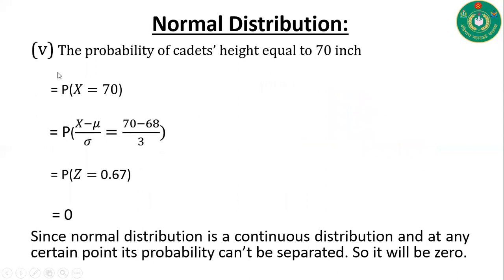Solution (v): Probability of cadets' height equal to 70 inches, that is P(x = 70), which gives P(z = 0.67) = 0, since normal distribution is a continuous distribution and at any single point its probability is 0.